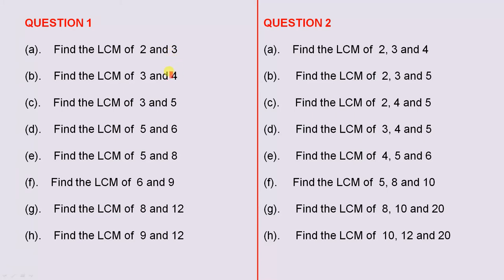Number B, the lowest common multiple of 3 and 4, and so on, all the way down. So in each case, we only have two numbers and we have to find the lowest common multiple for both of the numbers in each question.